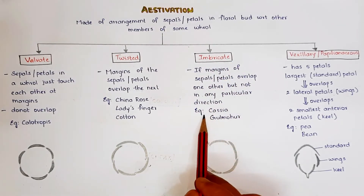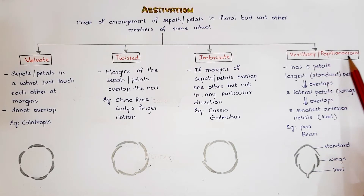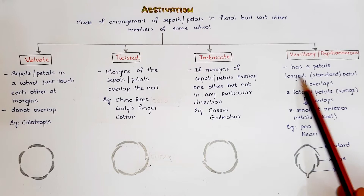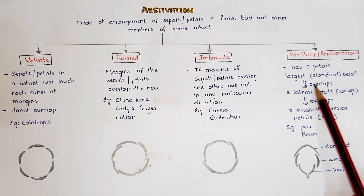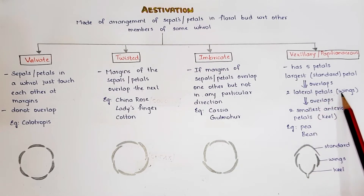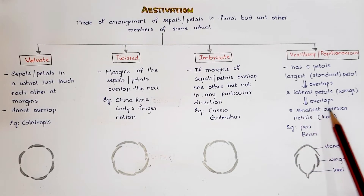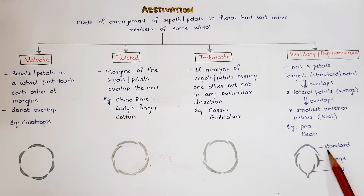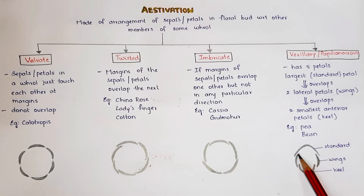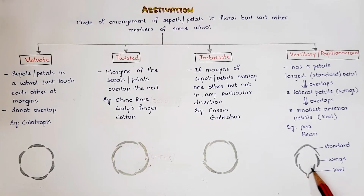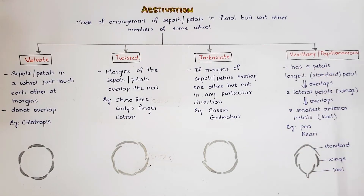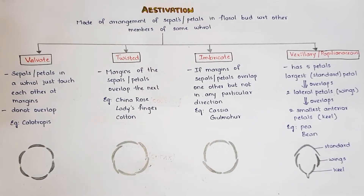Examples of imbricate aestivation are cassia and gulmohar. Coming to vexillary or papilionaceous aestivation: this type has five petals. The largest petal is the standard petal, which overlaps the two lateral petals called wings. These lateral petals overlap the two smallest anterior petals, which are fused to form a single one called keel. Example of vexillary aestivation is pea and bean.